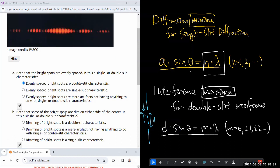Note that some of the bright spots dim on either side of the center. You're going to be looking for that in next week's lab. Is this a single or double slit characteristic? I would say that's the single slit minima. So that's the single slit characteristic.